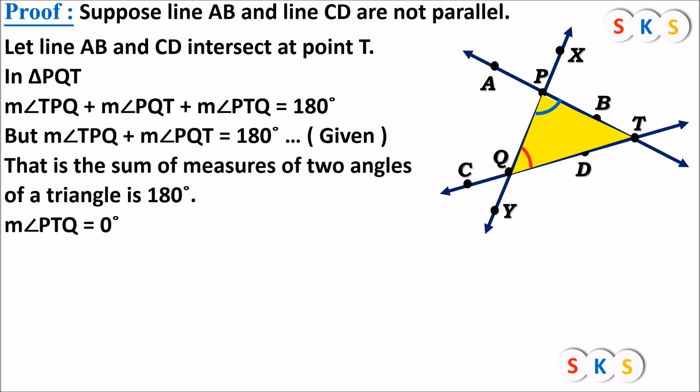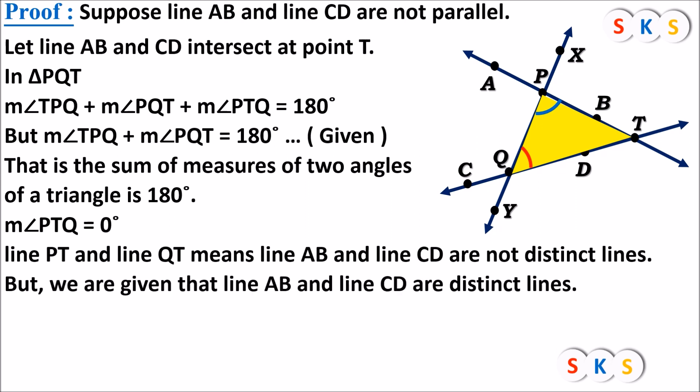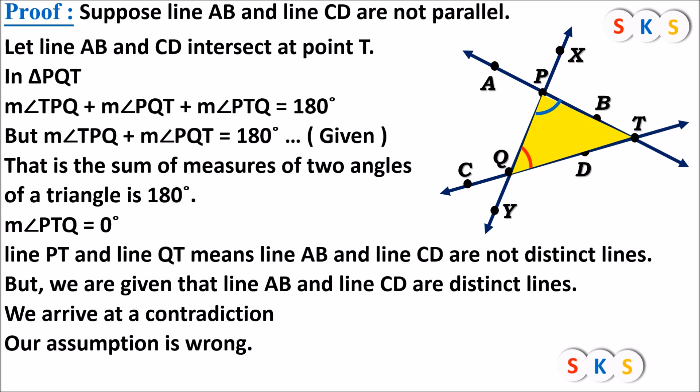If angle T is zero degrees, then line PT and line QT — meaning line AB and line CD — are not distinct lines; they are the same line. But it is given that the two lines are distinct, different lines. So we arrive at a contradiction, meaning our assumption is wrong.